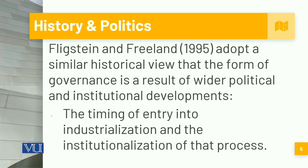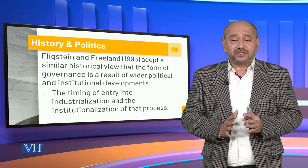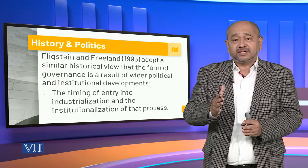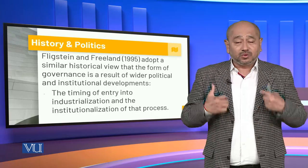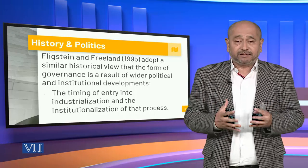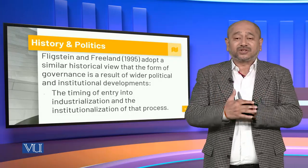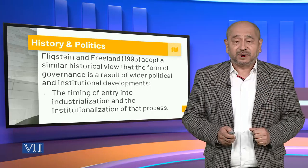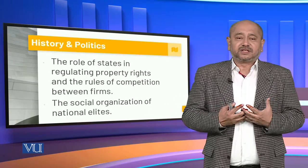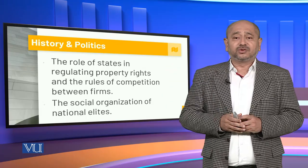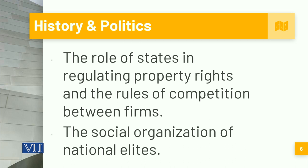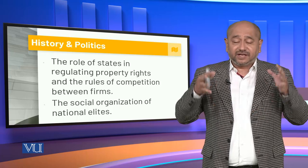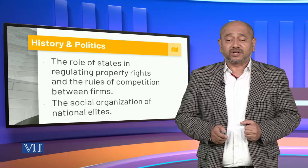Flickstein and Freeland adopted a similar historical view — that the form of governance is a result of wider political and institutional developments, the timing of entry into industrialization, and the institutionalization of that process. At the end of the 20th century, new frameworks, matrices, networks, and structures were being developed through re-engineering and restructuring, becoming more equitable and efficient, and better addressing the interests of different stakeholders. The role of states in regulating property rights and rules of competition also gained dominance within the context of convergence of corporate governance.